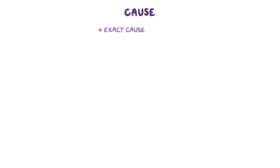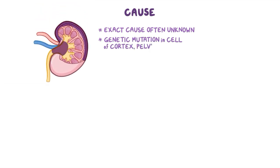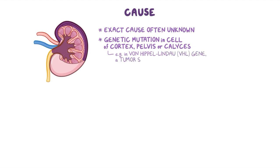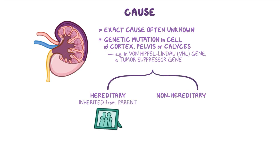The exact cause of renal cancer is often unknown, but there's typically a genetic mutation in a cell of the cortex, pelvis, or calyces, such as a mutation in the von Hippel-Lindau, or VHL gene. This is a tumor suppressor gene, so normally it suppresses the growth of tumor cells. These mutations can be hereditary, meaning the client inherits the mutation from one of their parents, or non-hereditary, also known as sporadic, which occur de novo or spontaneously.